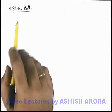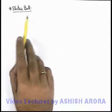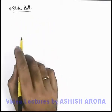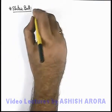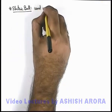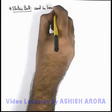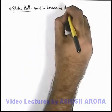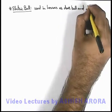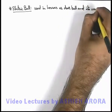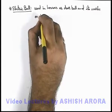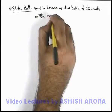Here we are going to discuss about an electric bell, which you use as your doorbell in your houses. About electric bell, we can write that it is used in houses as a door bell, and it works on the magnetic effect of current.